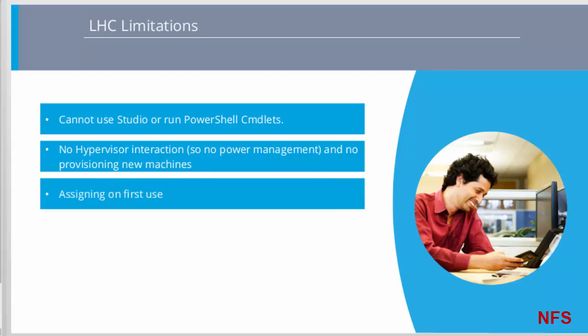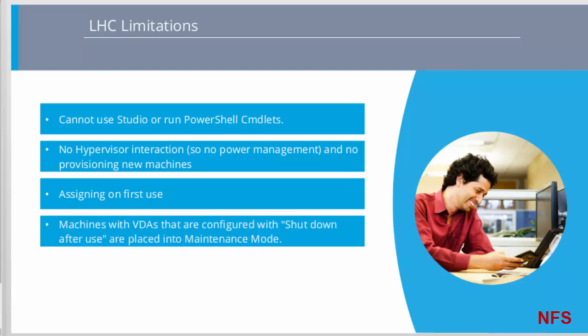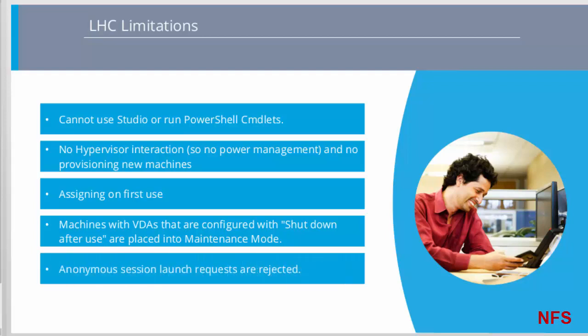If a user has not been assigned a machine before the connection to the central database has been lost, that user cannot be assigned on first use after the connection is lost. Shutdown-after-use, or tainted machines, are placed into maintenance mode. If a user has finished with a machine and it needs to be shut down and cleaned ready for a new user, this task cannot be performed as it requires the central database to be available. And finally, during an outage period, anonymous session launch requests are rejected.